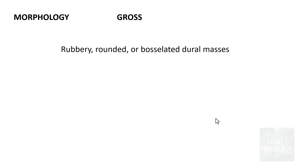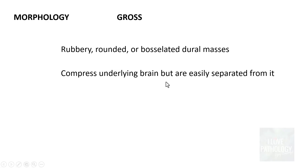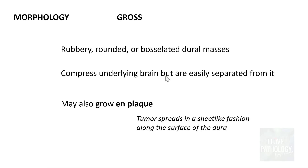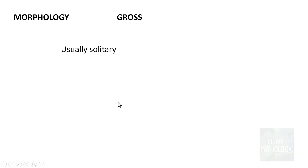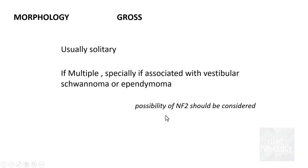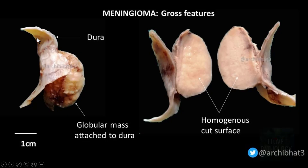Grossly, these tumours are often rubbery, rounded or lobulated dural masses. They can compress the underlying brain, but they can be easily separated from the underlying brain parenchyma. They can also grow in a plaque-like fashion, meaning the tumour can spread in a sheet-like manner along the surface of the dura. Usually they are solitary, but if multiple, association with vestibular schwannoma or ependymoma should prompt ruling out neurofibromatosis 2. This is a globular mass attached to the dura, though it arises from the arachnoid.